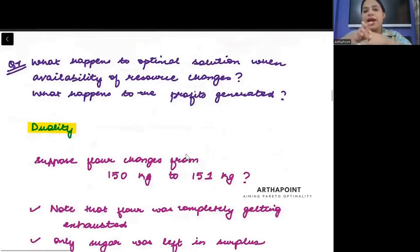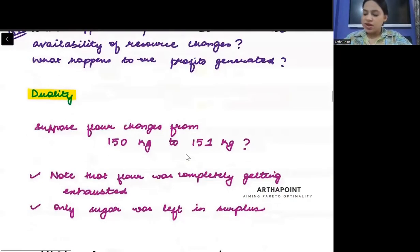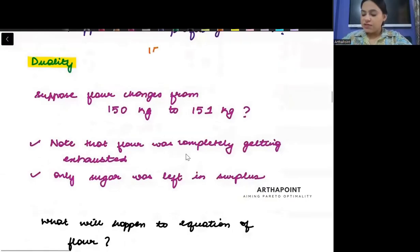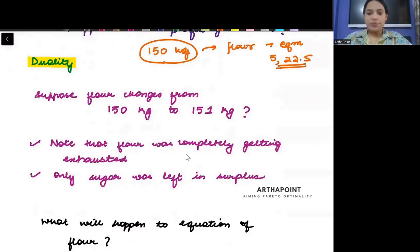So question is what happens when the availability of resources change? Just try to understand and try to refer back to the previous lecture. We said we have 1 kg of flour and then we had counted our equilibrium. In this equilibrium, the equilibrium of x1 star and x2 star were 5, 22.5. What happens when the availability of the resources change? Kya hota hai? Jab mein apne constraints ko change kardu. When I go ahead and change the constraints.